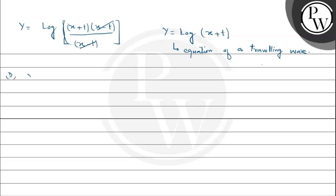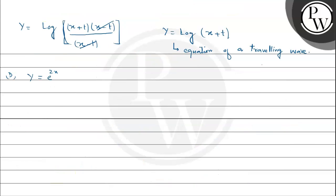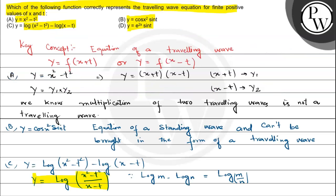Moving to option D, y is equal to e raised to the power 2x sin(e raised to the power 2x), which cannot be expressed in the form of x minus t. Therefore, this cannot be the equation of a traveling wave. The answer to this question is option C. Hope you understand the question. Best of luck!